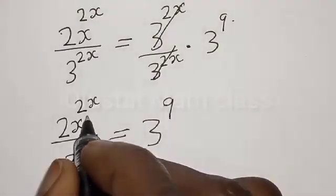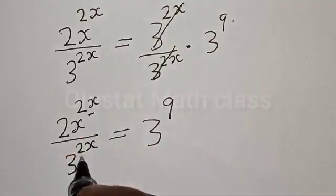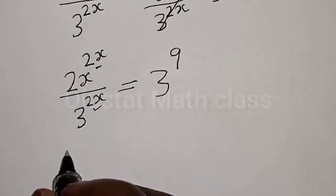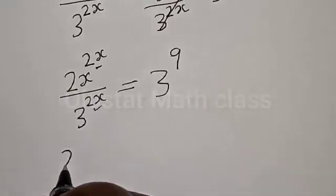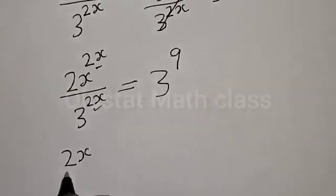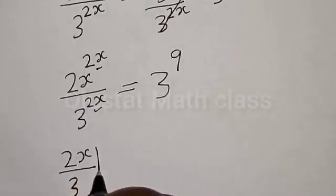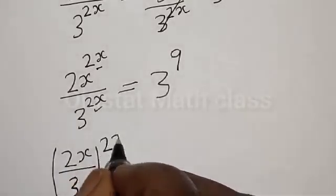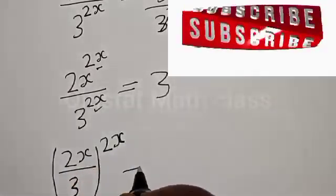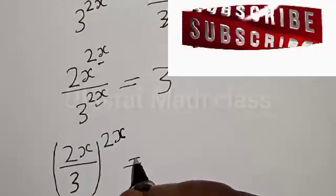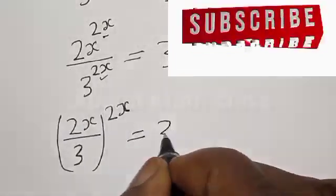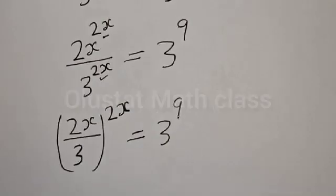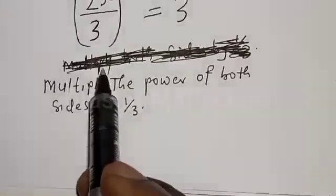Now we have the same power of 2x on both sides, which is common. So we can write 2s divided by 3, all raised to power 2x, is equal to 3 raised to power 9.